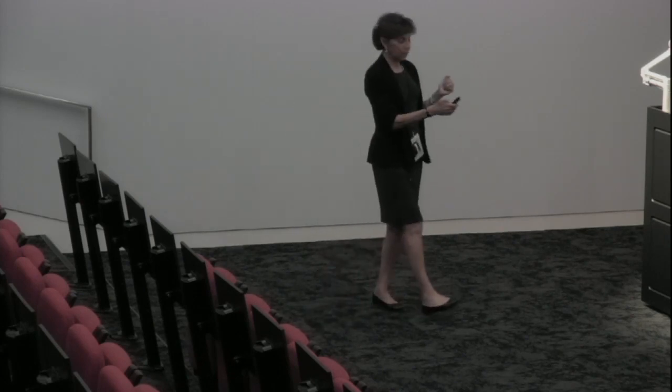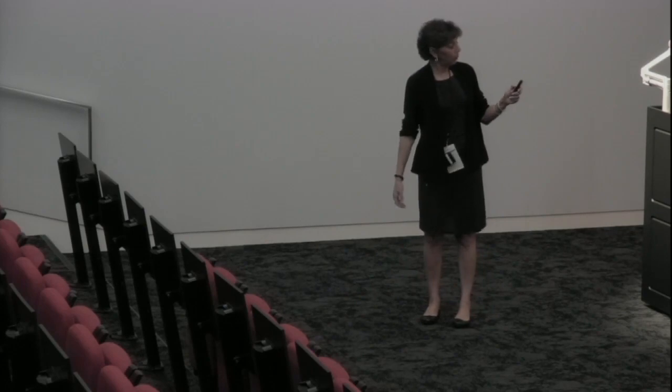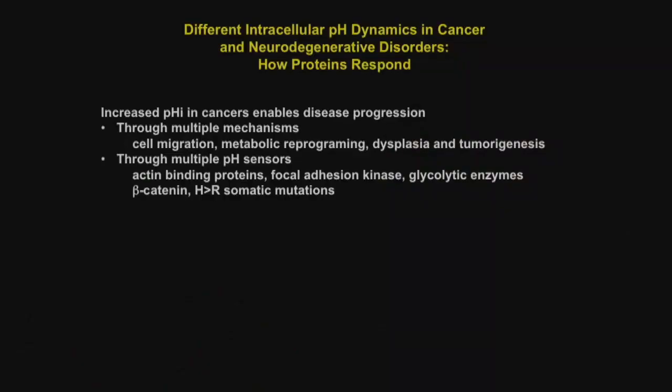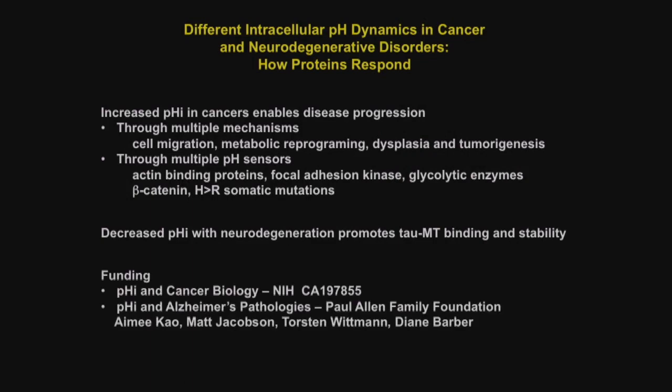In summary: increased pH in cancers enables a number of behaviors through multiple mechanisms and multiple pH sensors. We're just beginning to apply some of these principles to neurodegeneration and what this might mean in terms of changes in protein electrostatics. Our funding on pH in cancer is an NCI grant, and our funding on Alzheimer's pathologies is through the Paul Allen Family Foundation.